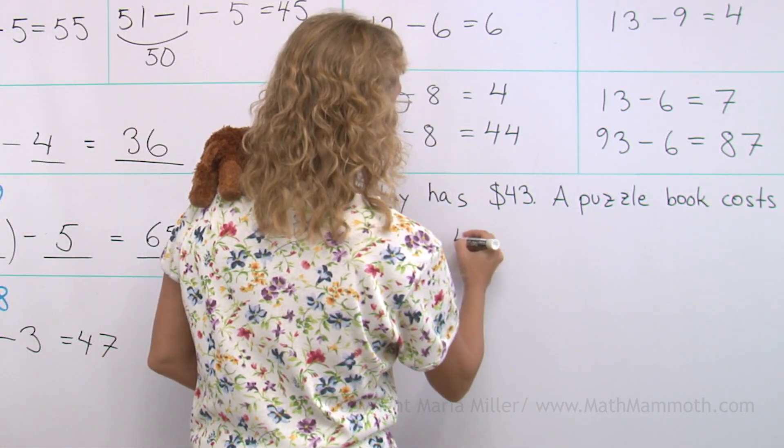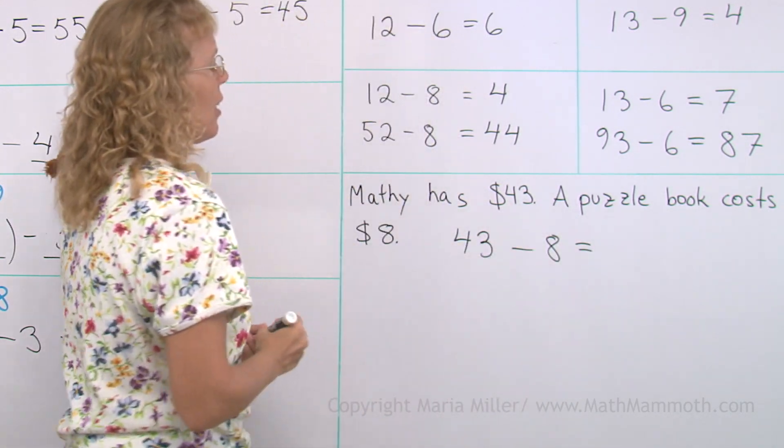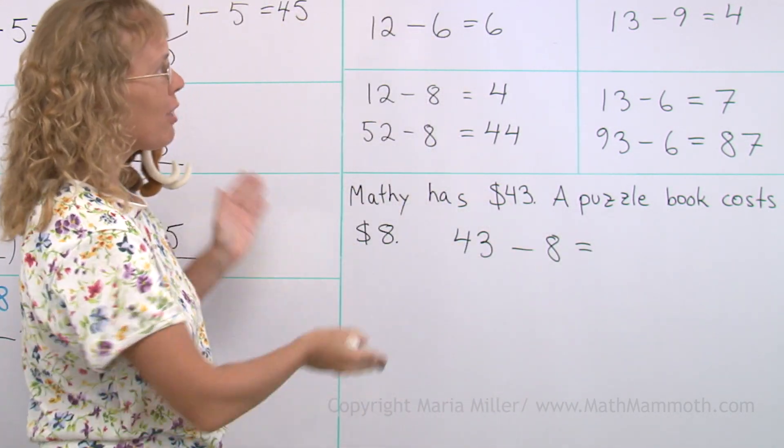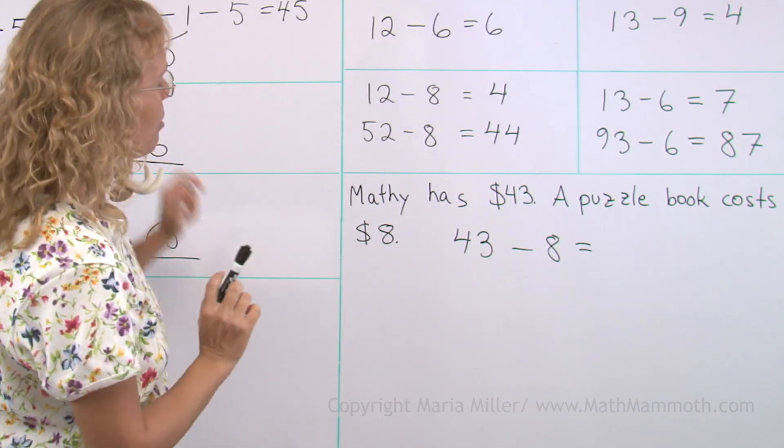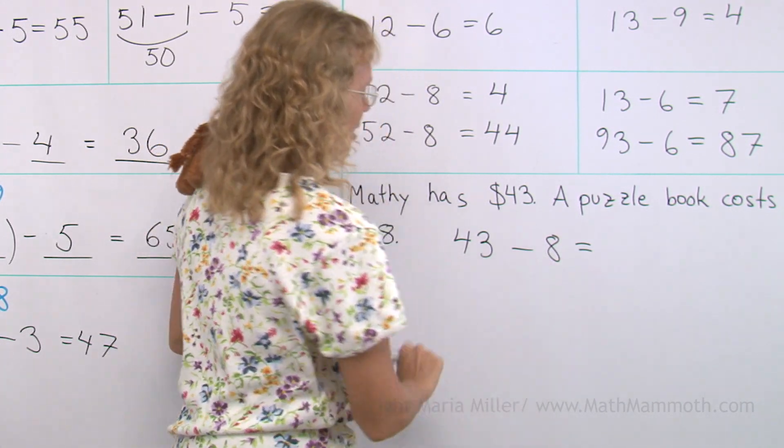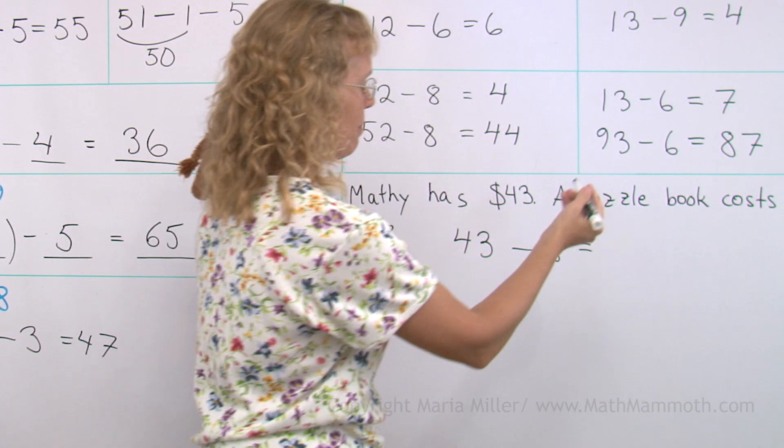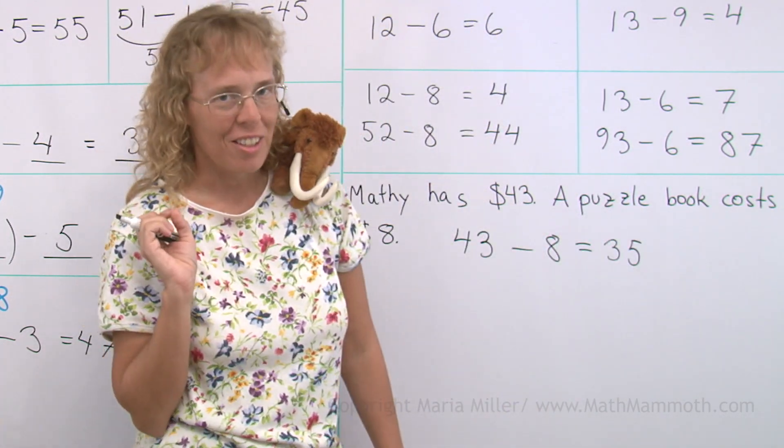And that would be, of course, the subtraction. 43 minus 8, right? And you have already learned two ways to do it. Maybe we'll do this one. Subtracting parts. 43 minus 3 first, and then 5. And so we will have 35, right? He will have $35 left.